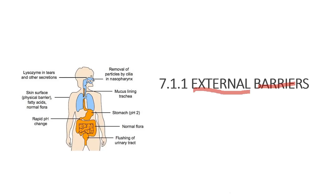As an example, you have lysozyme in tears and other secretions. The skin surface acts as a physical barrier and also contains fatty acids and normal flora. The stomach is able to change the pH rapidly. Normal flora is present in the intestine, the urinary tract undergoes flushing, the trachea has a mucous lining, and cilia function to move particles in the nasopharynx.